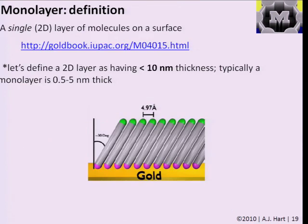We're going to define a monolayer as a single two-dimensional layer of molecules on a surface — it doesn't matter if the molecules are big or small. That's the definition from the International Union of Pure and Applied Chemistry. Dimensionally, I like to think of a two-dimensional layer as something with less than 10 nanometers thickness. A typical monolayer might be anywhere from half a nanometer to a few nanometers thick, and we'll see how the chains can get fairly long based on their chemistry and their angle with respect to the substrate.